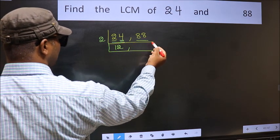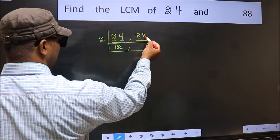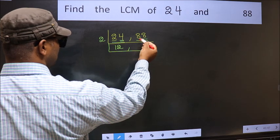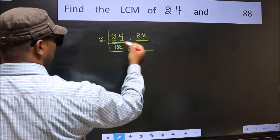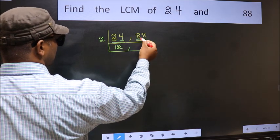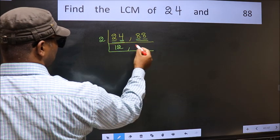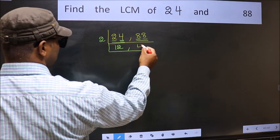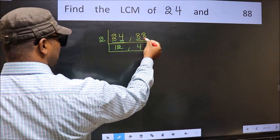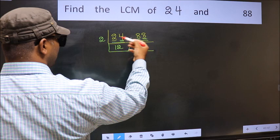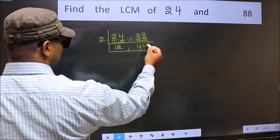Now the other number 88 — last digit 8, so this is divisible by 2. First number 8: when do we get 8 in the 2 table? 2 times 4 is 8. The other number 8: when do we get 8 in the 2 table? 2 times 4 is 8.